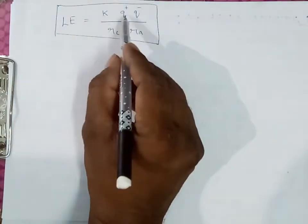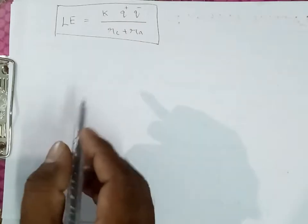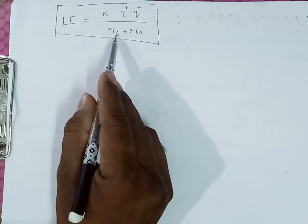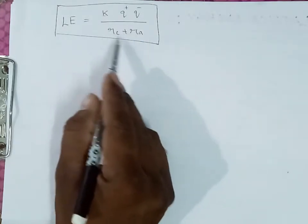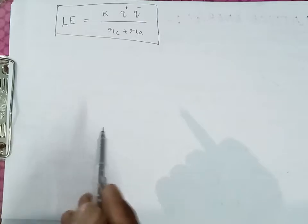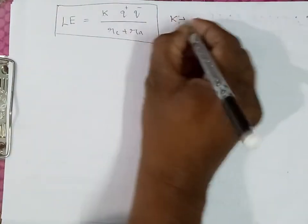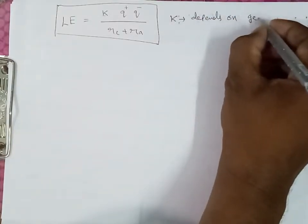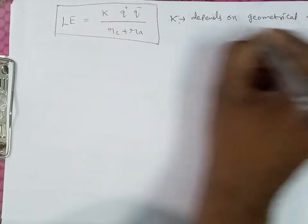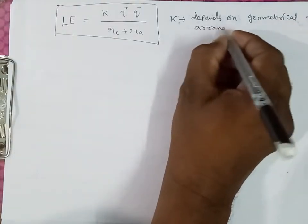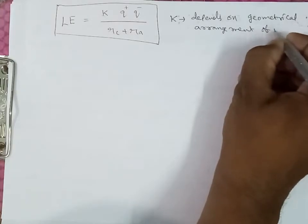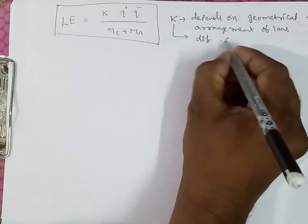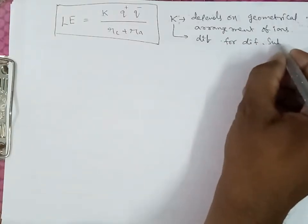The formula of lattice energy can also be written as k times (q+)(q−) divided by (r_c + r_a), where q+ and q− are the charges of the cation and anion respectively, and r_c + r_a is the total distance between cation and anion. The constant k depends on the geometrical arrangement of ions and has different values for different substances.